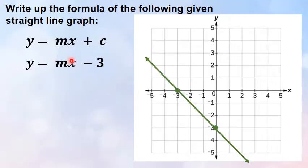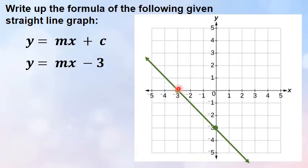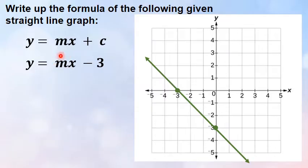So y is equal to mx minus 3 we already have. How to find the gradient — luckily for this one it's quite easy because you've got a grid and you can actually just read it off the graph. Is this going to be an increasing or a decreasing graph? It's a decreasing graph, so if you had a little person standing on top they're going to go way down the hill. So we know that our gradient must be negative.